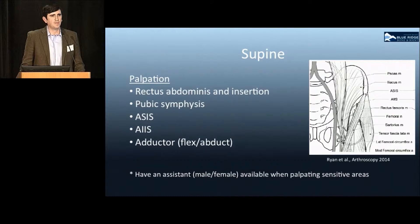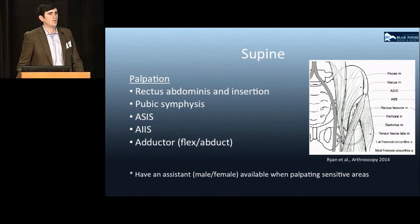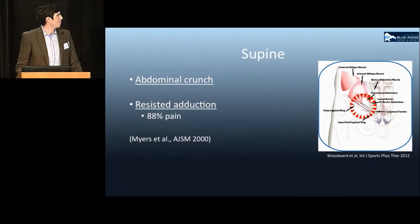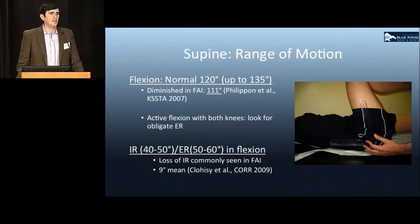The patient is next placed in the supine position. Palpation starts with the rectus abdominis and its insertion, the ASIS, the AIIS, the pubic symphysis, and the pubic bone. The adductor is best palpated by flexing and abducting the hip. It's important to have an assistant available when palpating sensitive areas. I'll have the patient perform an abdominal crunch and resisted adduction, as this is shown to cause pain in a high percentage of patients undergoing surgery for sports hernia.